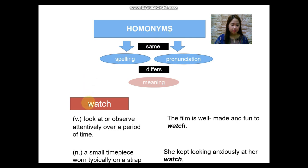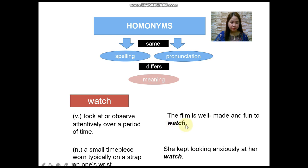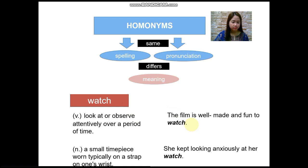Let's have this example. The word is 'watch.' 'The film is well made and fun to watch.' The word 'watch' in this sentence means to look at or observe attentively over a period of time, and it functions as a verb — specifically an infinitive verb. Here's another meaning: 'She kept looking anxiously at her watch.' In this sentence, 'watch' is a noun, which means a small timepiece worn typically on a strap on one's wrist.